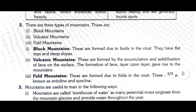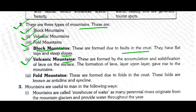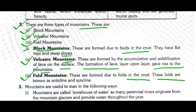Question 2: What are the different types of mountains? There are three types of mountains: Block Mountain, Volcanic Mountain, and Fold Mountain. Block mountains are formed due to faults in the crust; they have flat tops and steep slopes. Volcanic mountains are formed by the accumulation and solidification of lava on the surface — layers of lava building up give rise to the mountains. Fold mountains are formed due to faults in the crust; these faults are known as anticlines and synclines.